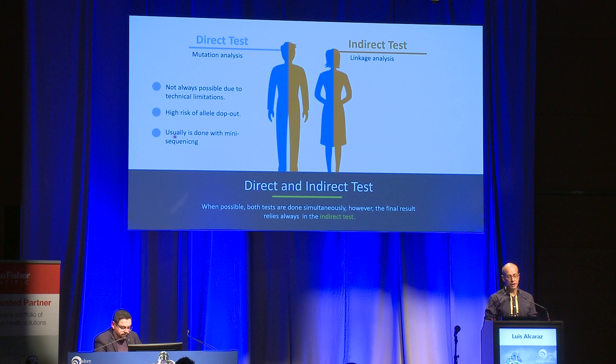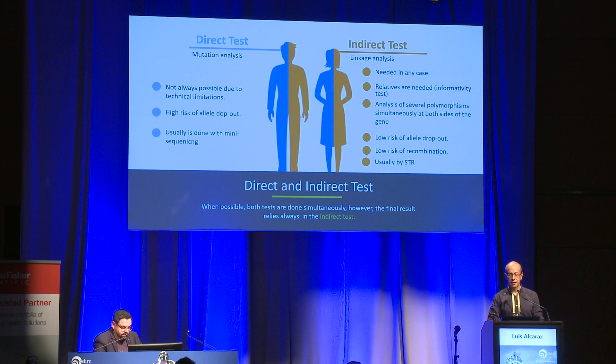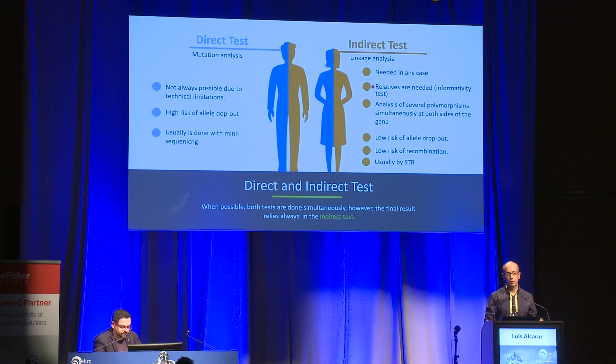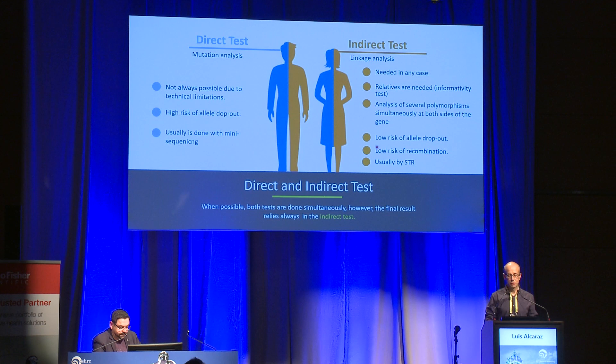Regarding the indirect test, this is mandatory in any case — we always need to do it. To perform the linkage analysis and diplotyping, we always need relatives to carry out the informativity test. We analyze several polymorphisms simultaneously at both sides of the gene. By this way we reduce the risk of allele dropout, and by analyzing polymorphisms around the gene we also reduce the risk of recombination. Previously, this was usually done by STRs.